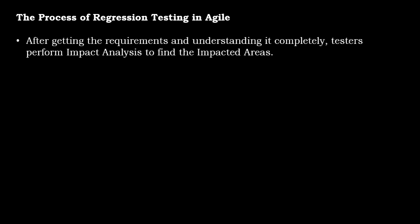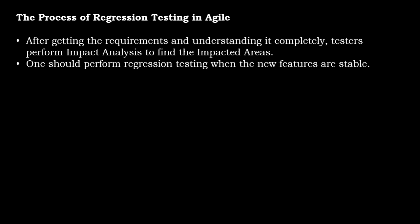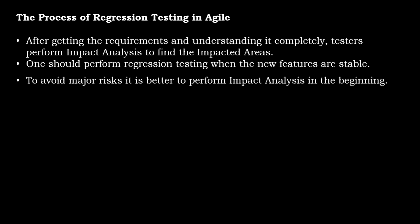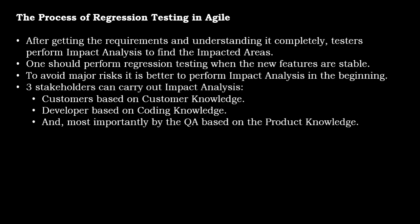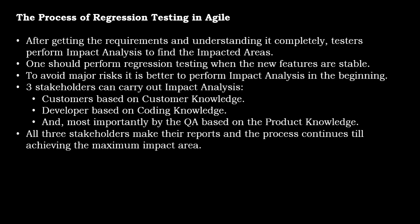Next is the process of regression testing in Agile. After getting the requirements and understanding them completely, testers perform impact analysis to find the impacted areas. Regression testing should be performed when new features are stable. To avoid major risk, it is better to perform impact analysis early. Three stakeholders can carry out impact analysis: the customer based on customer knowledge, the developer based on coding knowledge, and QA based on product knowledge. All three stakeholders make their reports, and the process continues until achieving the maximum impact area.